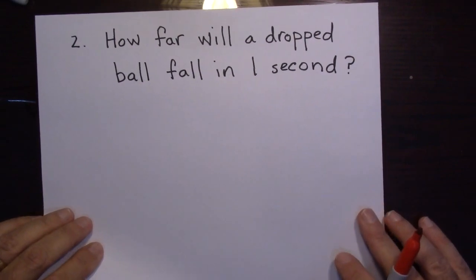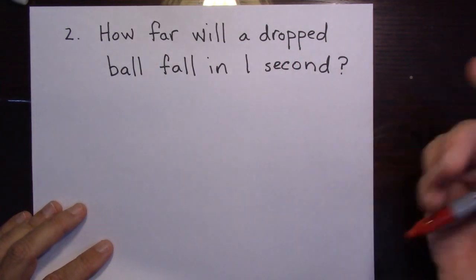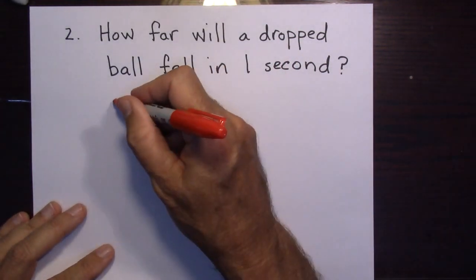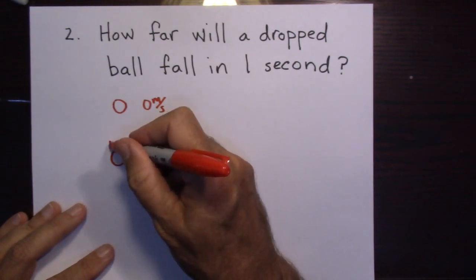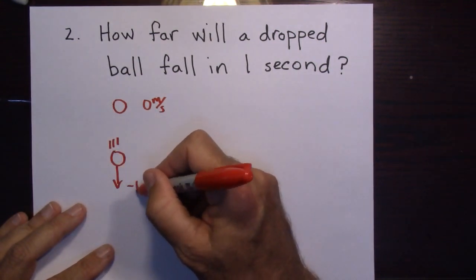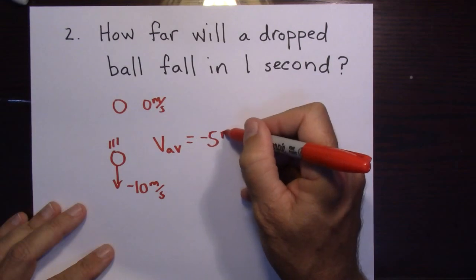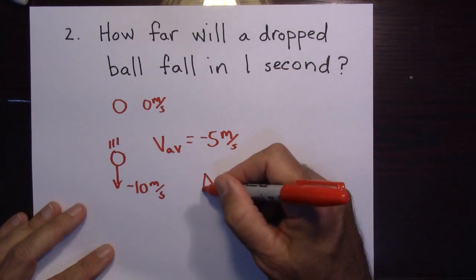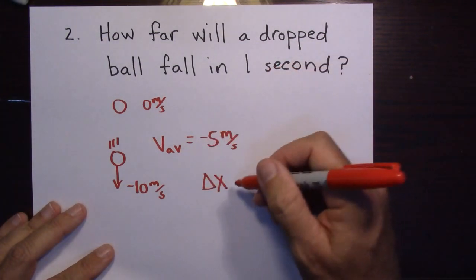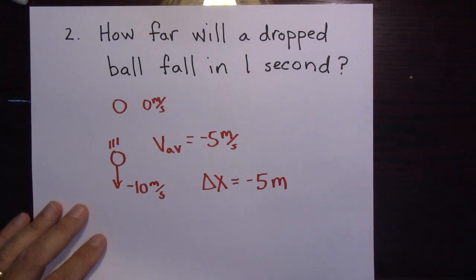Let's try another one — you might pause to try it first. How far will a dropped ball fall in just one second? It starts at zero meters per second. After one second it's going negative 10 meters per second. The average velocity is negative five meters per second. Multiply by one second and delta X equals negative five meters. It falls five meters. See how easy these are — really fast.